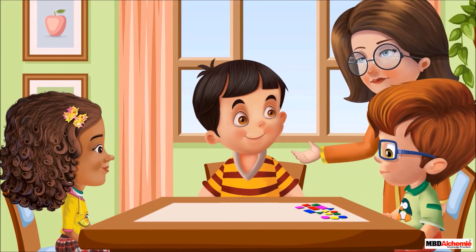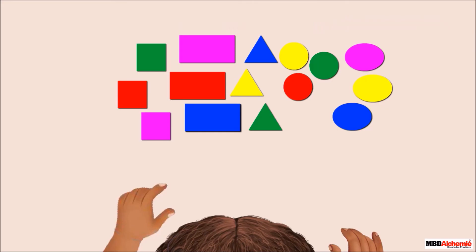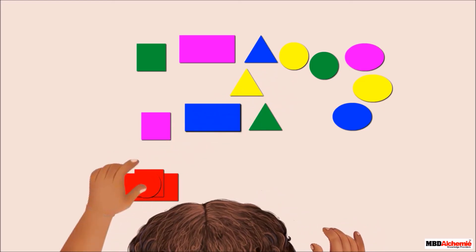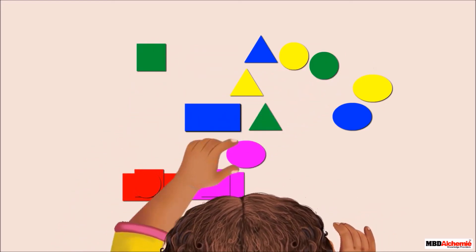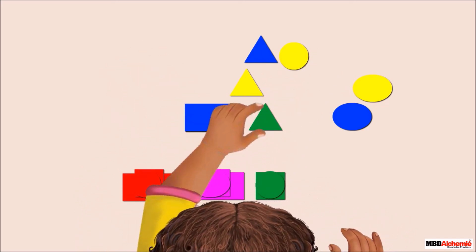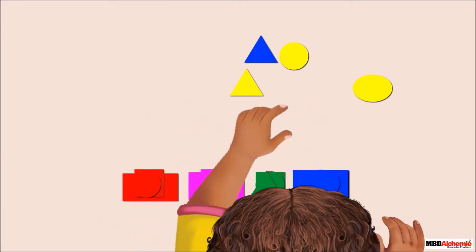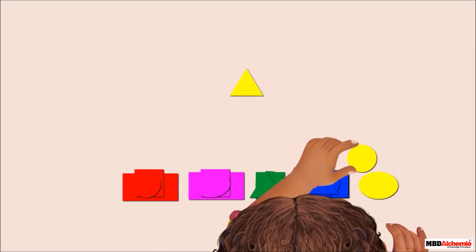Then, Mrs. Rhea asks Sophie to group the cards according to their colors. She starts grouping the cards according to their colors. First, she groups all the red cards. Then, she groups all the pink cards. Then, she groups all the green color cards. Then, she groups all the blue cards. Lastly, she groups all the yellow cards.